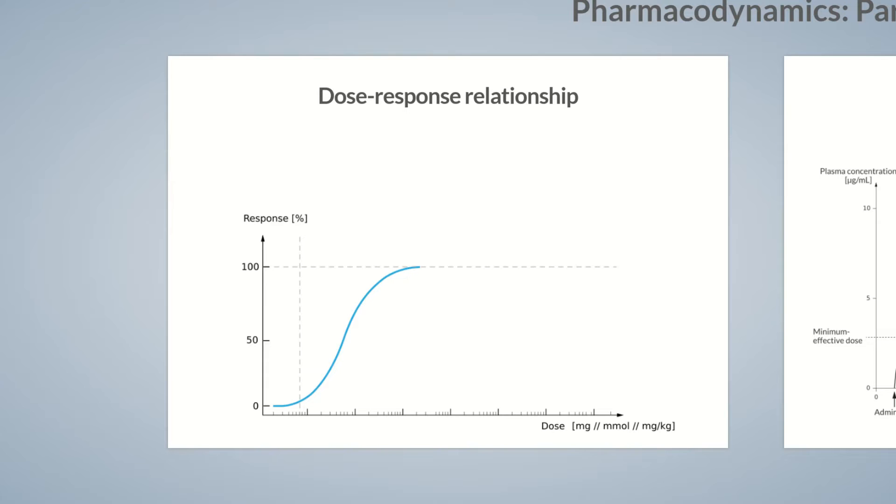To compare different drugs with one another, there are some important pharmacological parameters that you should know. The efficacy is the maximum effect a drug is capable of producing based on its therapeutic goal. The efficacy can be quantified by the effective dose, in short, ED.